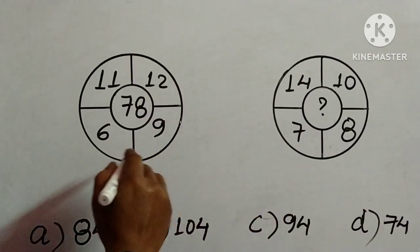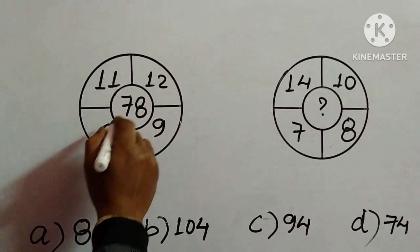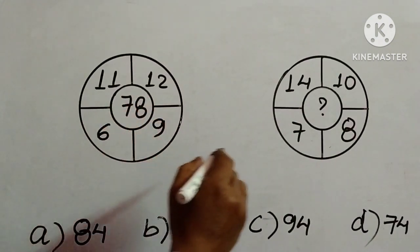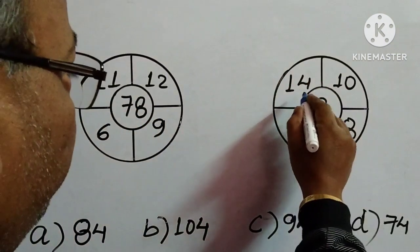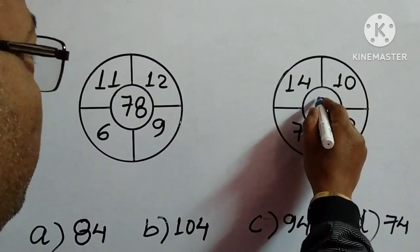Two figures are given. In the first circle we have 11, 12, 9, 6, and 78 in the middle. In the second circle we have 14, 10, 8, 7 and we need to find out this number. Four options are given.